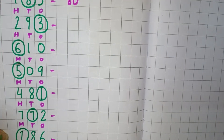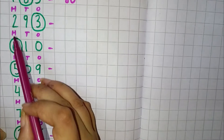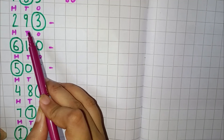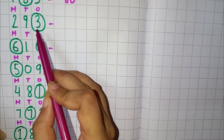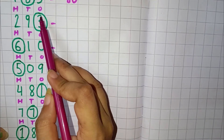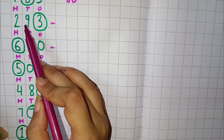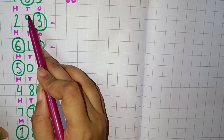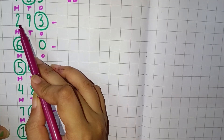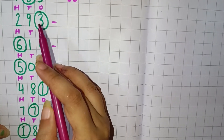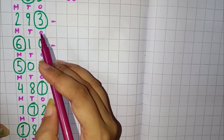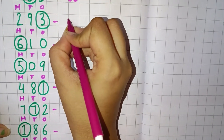The next number is 293. Here 3 is in the 1's place, 9 is in the 10's place, and 2 is in the 100's place. 3 is circled, so we will write here 3.